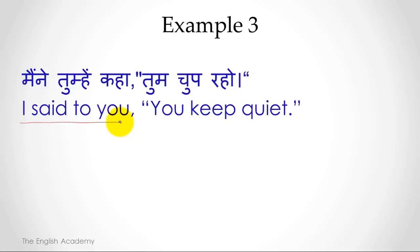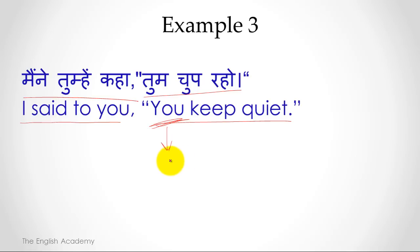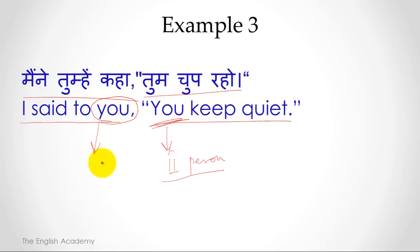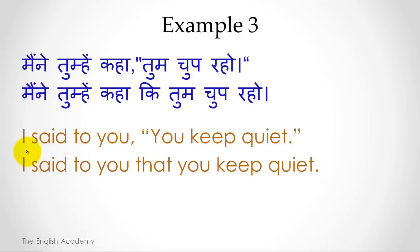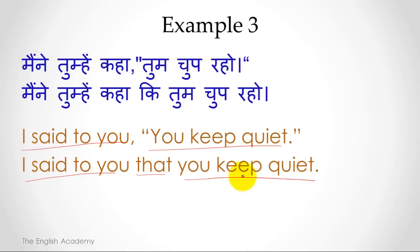'I said to you, You keep quiet.' Here 'you' in the reported speech is second person. The object of the reporting verb is also 'you,' which is second person. So 'you' remains 'you' — it does not change. The indirect speech is: 'I said to you that you keep quiet.' When the pronoun in the reported speech and the object of the reporting verb are already in the same person, the pronoun remains unchanged.